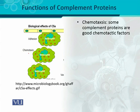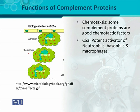Another important function of the complement protein is chemotaxis. Chemotaxis is the phenomenon by which immune cells move or are attracted under the action of certain chemicals — 'chemo' means chemical and 'taxis' means movement. Complement proteins sometimes serve as chemoattractants or chemotactic factors. For example, C5A is one of the important complement components and is a potent activator of immune cells such as neutrophils, basophils, and macrophages.